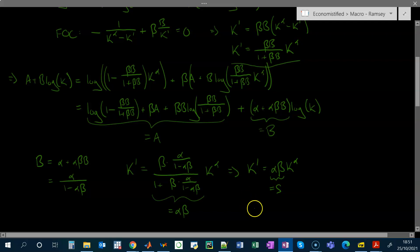I can also find the consumption policy function, which is, of course, just output minus investment. Investment here, since this is full depreciation, is just equal to our choice of capital. So this is just going to be one minus alpha beta times k to the alpha. So indeed, consumption is also a constant fraction of output.